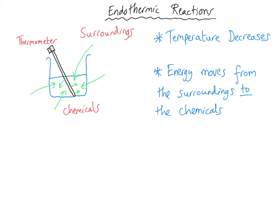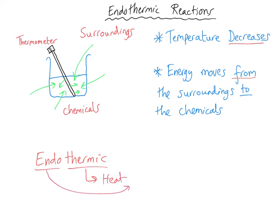Endothermic reactions involve a temperature decrease because energy moves from the surroundings to the chemicals. We can explore the word 'endothermic' to remember this: 'thermic' is once again to do with heat, and 'endo' is very similar to the word 'enter'. So heat energy enters the chemicals — making endothermic the exact opposite of exothermic, where heat energy exits the chemicals.